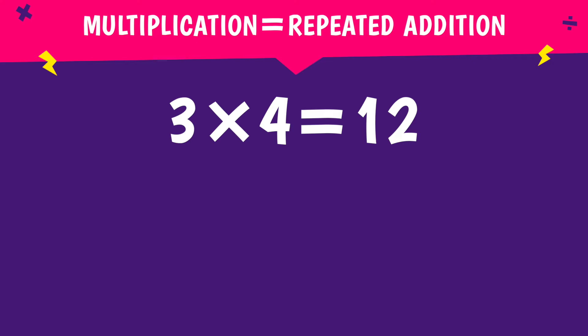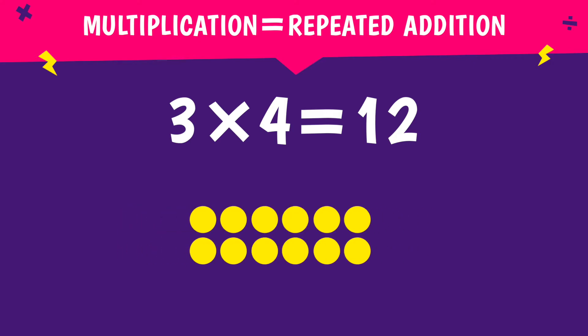Three times four is really just four add four add four equals 12. It's repeated addition: four, eight, 12. Three groups of four make 12. So if someone asked me how many groups of four are there in 12, I would know it was three because three times four is 12.